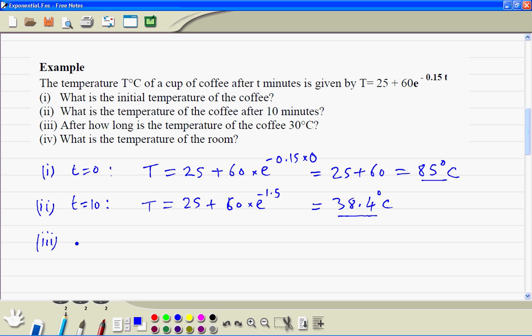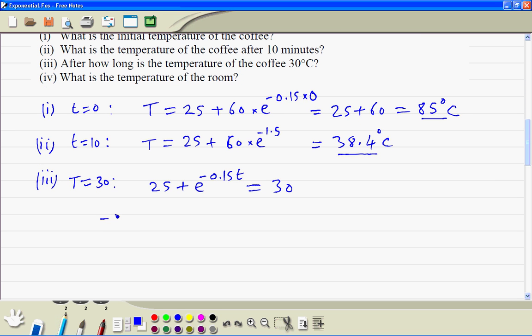Part 3: The big T is equal to 30, so we write the formula. 25 plus 60e^(-0.15t) equals 30. Subtract 25 from both sides, so we have 60e^(-0.15t) equals 5. Divide by 60, so we get e^(-0.15t) equals 1 divided by 12.